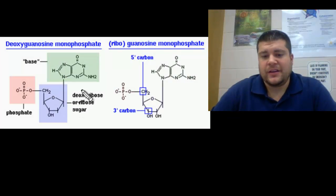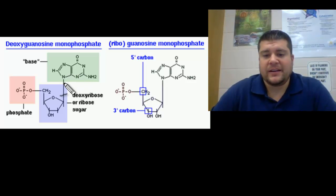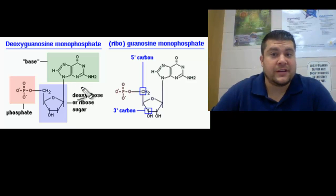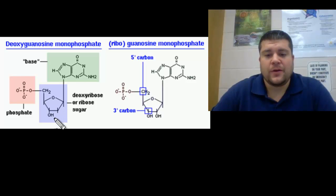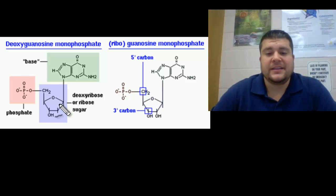The nucleotides are the important building blocks, or the monomers, of nucleic acids. When we look at them, we are looking at the nitrogenous base — which can be cytosine, guanine, adenine, and thymine, or uracil if we are talking about RNA — a sugar, which for DNA is deoxyribose, and for RNA is ribose. The 'deoxy' in DNA stands for deoxygenated. And then we are looking at a phosphate group.